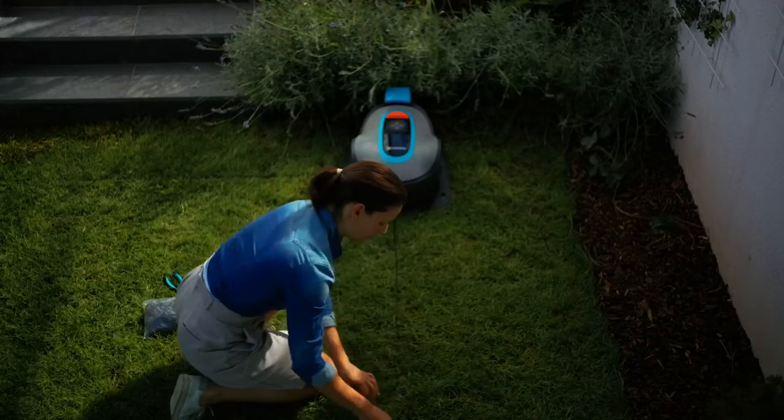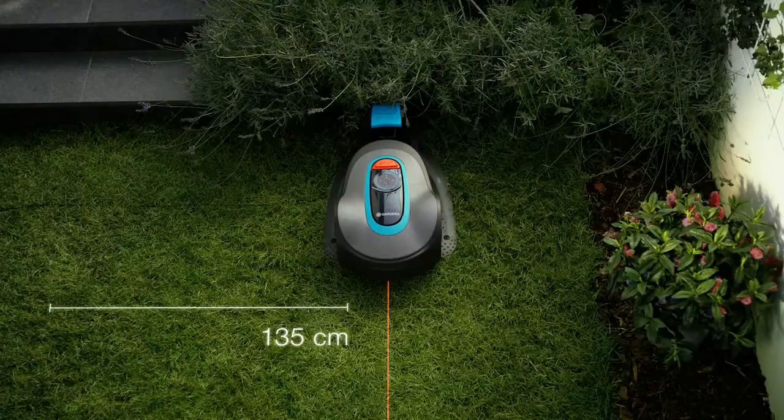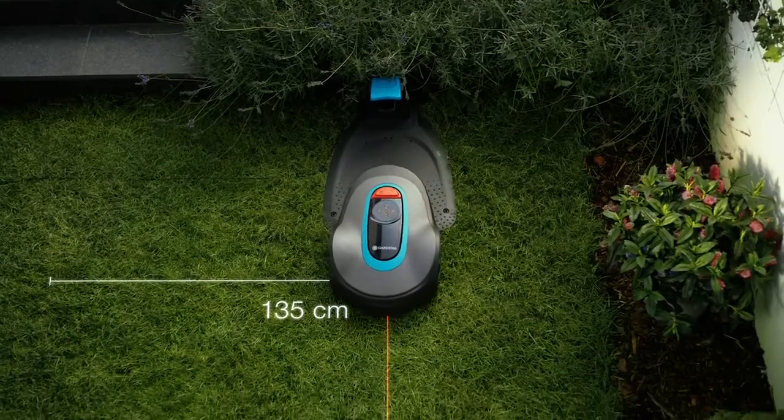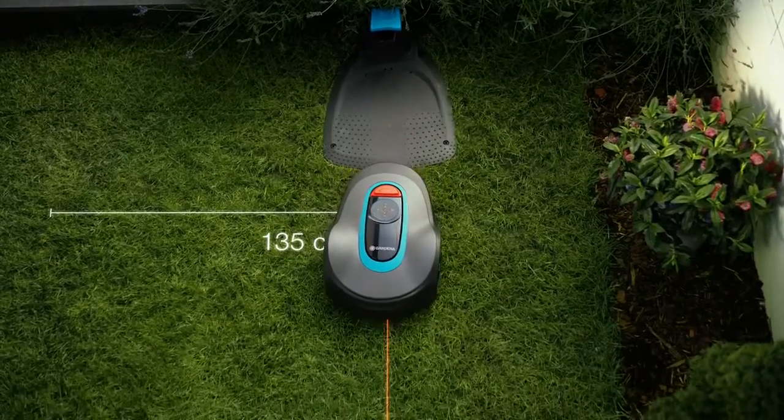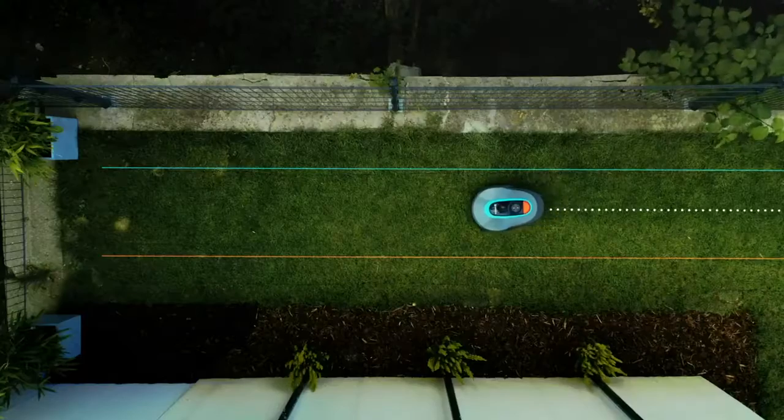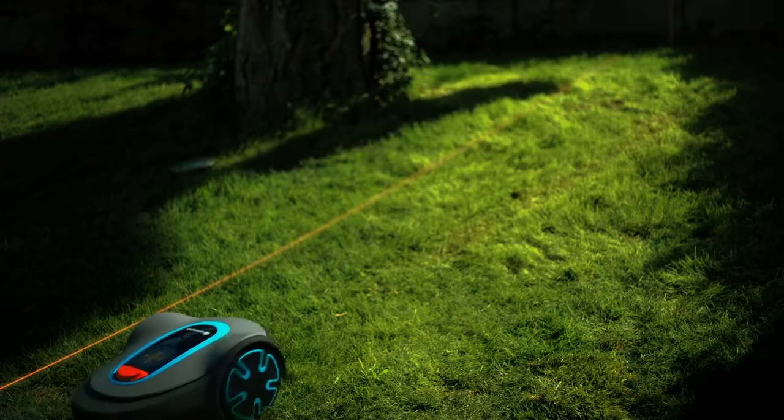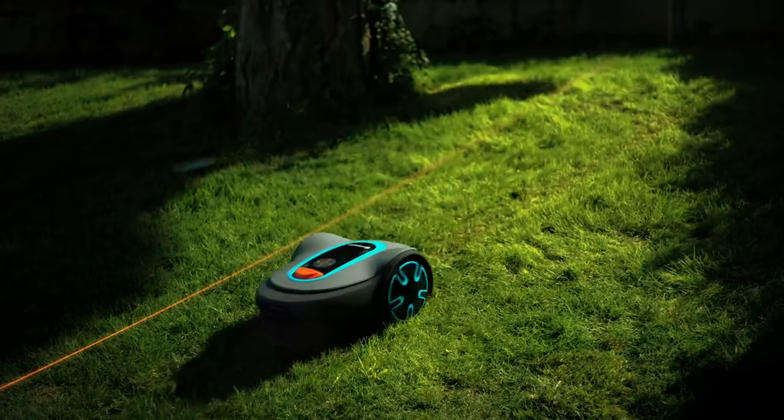When doing so ensure that there is as much space as possible on the left side of the wire facing the charging station. If possible 135 centimetres or more. When the mowing robot runs along the Guidewire it is never directly on top of the wire, but rather parallel to it at varying intervals to prevent creating tracks.